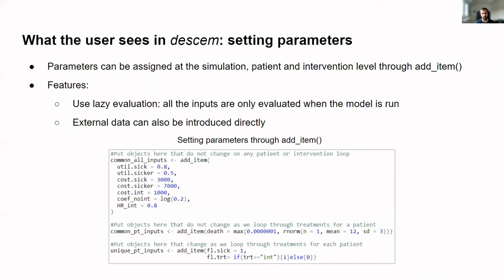As Valerie was mentioning, we need to set up certain inputs to run the model, including parameters. One key feature our package implements to make it readable and accessible is lazy evaluation. That means when you set up the value of a parameter it is not executed immediately, but rather evaluated when the model is run. This means you can set up your parameters dynamically — based on what loop or intervention you're running, you can set the value of a parameter to one or zero. You can also implement external data by directly calling a data frame or setting it as one of the parameters, since parameters can be numbers, lists, data frames, or any structure.